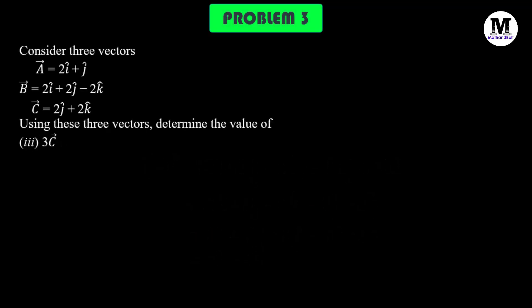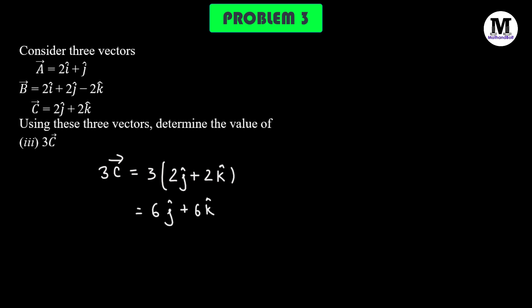Problem number 3: here we have to find 3 times the vector C. Simply multiplying the scalar 3 to each of the scalar components of vector C, that should give us 6j cap plus 6k cap.